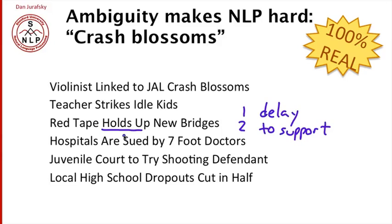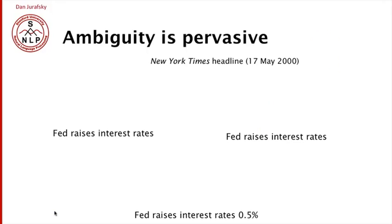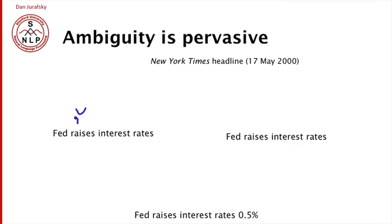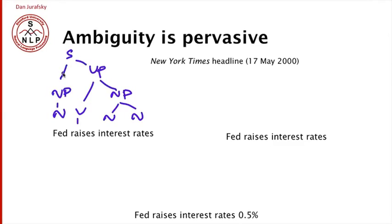It's not just amusing headlines that have ambiguity — ambiguity is pervasive throughout natural language text. Consider a seemingly unambiguous headline: 'Fed raises interest rates.' We can draw a phrase structure parse where 'raises' is the main verb, 'Fed' is the subject noun phrase, and 'interest rates' is the noun phrase object. We can also write a dependency parse with 'raises' as the head verb, 'Fed' as an argument, 'rates' as another dependent, and 'interest' as a dependent of 'rates.' This is called a phrase structure parse, which we'll discuss later in the course.